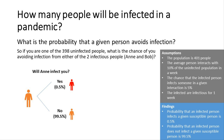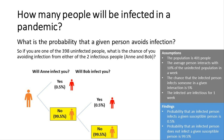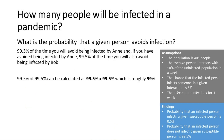Will Anne infect you? The chance is 0.5%, so the chance she won't is 99.5%. Now what about Bob? If you weren't infected by Anne — true in 99.5% of cases — then Bob will infect you just 0.5% of the time and won't infect you 99.5% of the time. The only path we care about is Anne didn't infect you AND Bob didn't infect you. So the probability is 99.5% times 99.5%, which is roughly 99%.